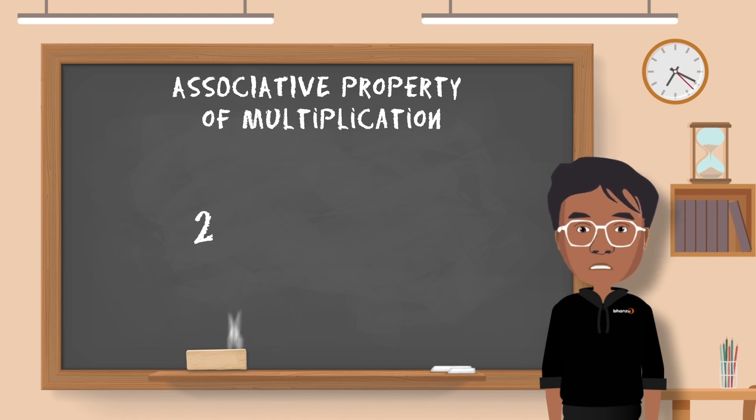What is 2 multiplied by 3 multiplied by 4 but the 3 and 4 are in brackets? That is 24, right?